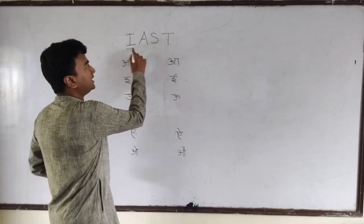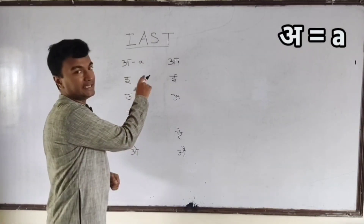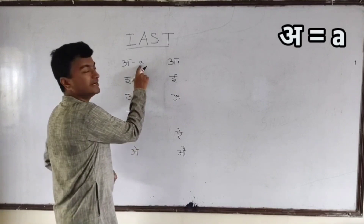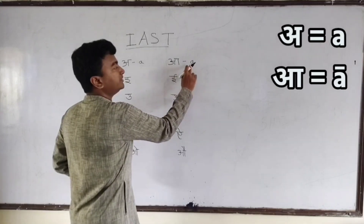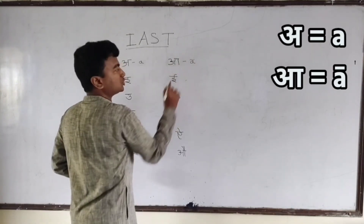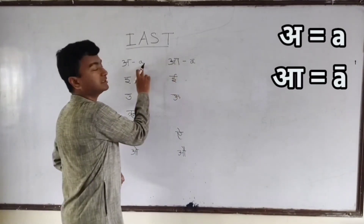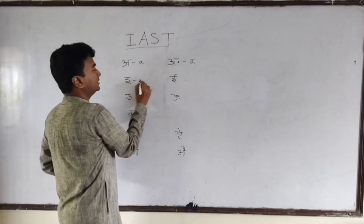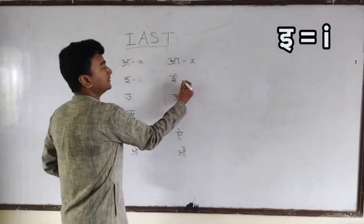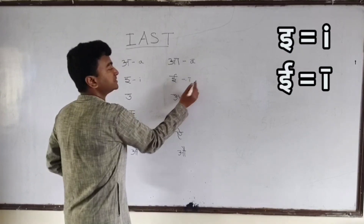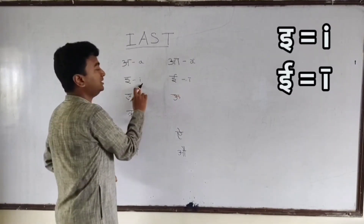According to the IAST, the short 'a' sound is represented by a simple 'a', and the long 'ā' sound is represented by an 'a' with a bar at the top — a macron. So 'a' is the short vowel and 'ā' is the long vowel. Similarly, the short 'e' (choti e) is represented by a small 'i', and the long 'ī' is represented by 'i' with a bar. So 'i' = short vowel, 'ī' = long vowel.